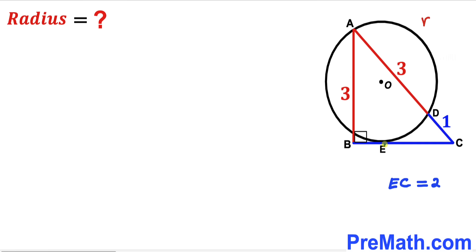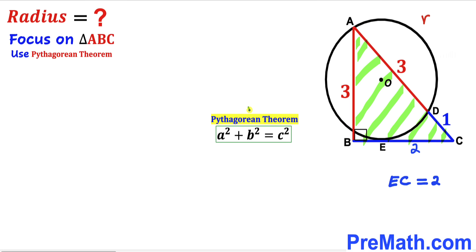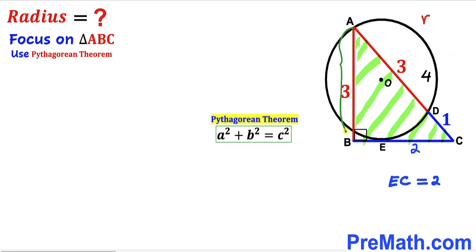Now let's focus on right triangle ABC and apply the Pythagorean theorem. Our hypotenuse is the whole AC, which is 3 + 1 = 4 units, whereas leg AB is 3 units, and BC is our other leg.